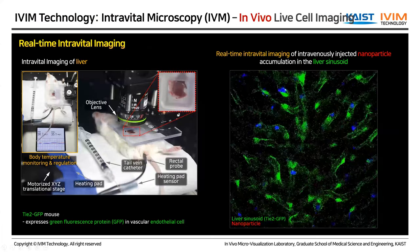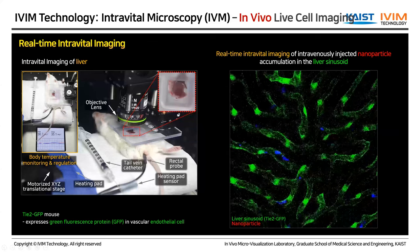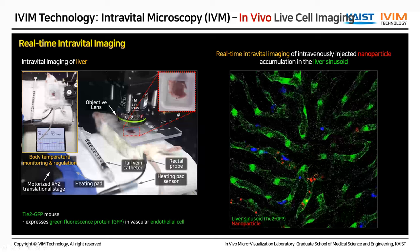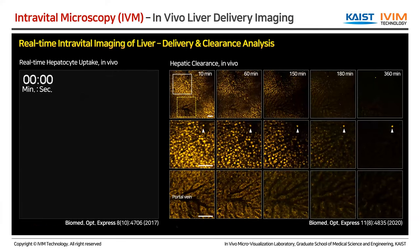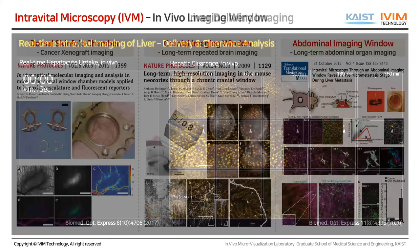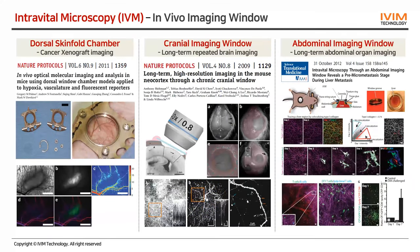For liver imaging preparation, we place the mouse on its back, use a bracket to expose the liver, and then image it. Other available imaging chambers include the dorsal skin fold chamber for cancer direct imaging, cranial imaging window for long-term repeated brain imaging, and various abdominal organ imaging windows. We import all this imaging technology and modify it to be readily integrated with our microscope setup.